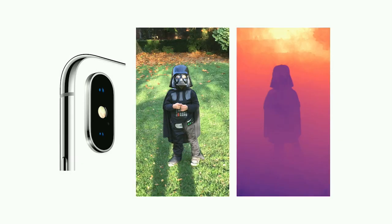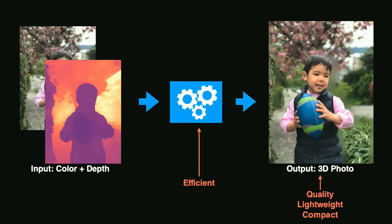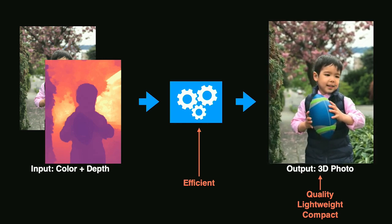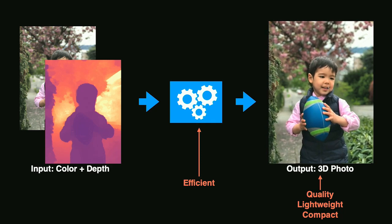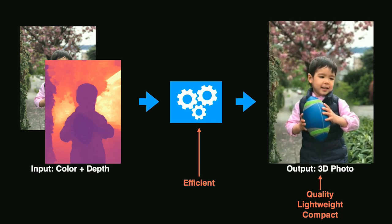So what do you need to create a 3D photo? Currently, all you need is an iOS device that has two cameras. When you use the portrait capture mode on these devices, in addition to the color image, it uses a stereo computer vision algorithm to compute a depth map. Our algorithm takes as input a color image and its corresponding depth map. Then, in a matter of seconds, it computes a lightweight and compact 3D model that represents this photo. This all runs completely on device.